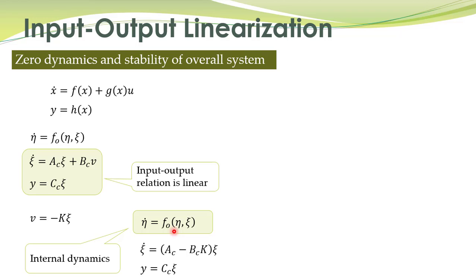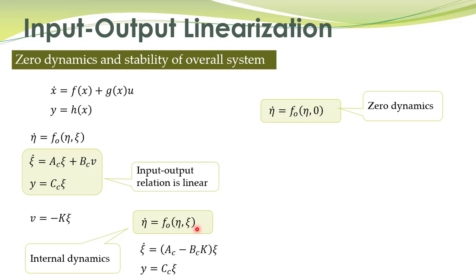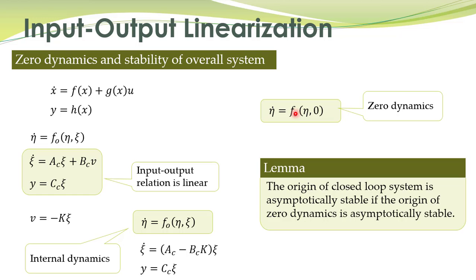In addition to ensuring the stability of the linear dynamics, we must ensure the stability of internal dynamics as well. For that purpose we define another dynamic system called the zero dynamics of the system. The zero dynamics are obtained from the internal dynamics by replacing xi with zero in those state equations.